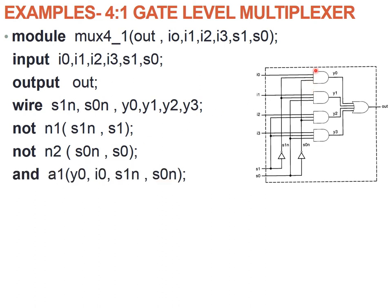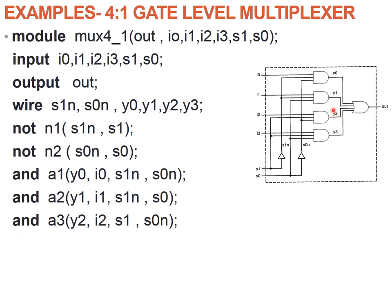For the first AND gate A1, the output is Y0 and inputs are I0, S1N, S0N: AND A1 (Y0, I0, S1N, S0N). The second AND gate has output Y1, inputs I1, S1N, S0: AND A2 (Y1, I1, S1N, S0). The third AND gate has output Y2, inputs I2, S1, S0N: AND A3 (Y2, I2, S1, S0N). The fourth AND gate has output Y3, inputs I3, S1, S0: AND A4 (Y3, I3, S1, S0).